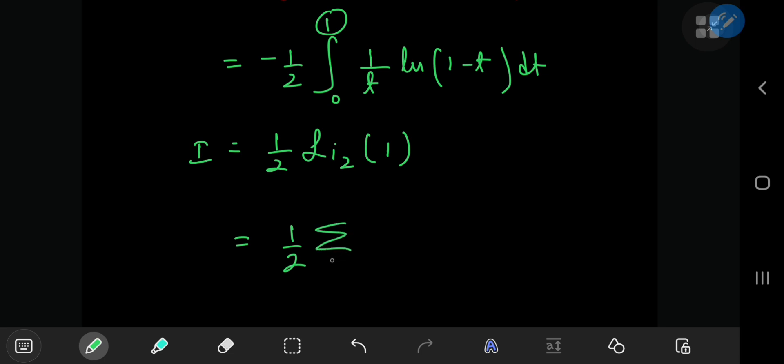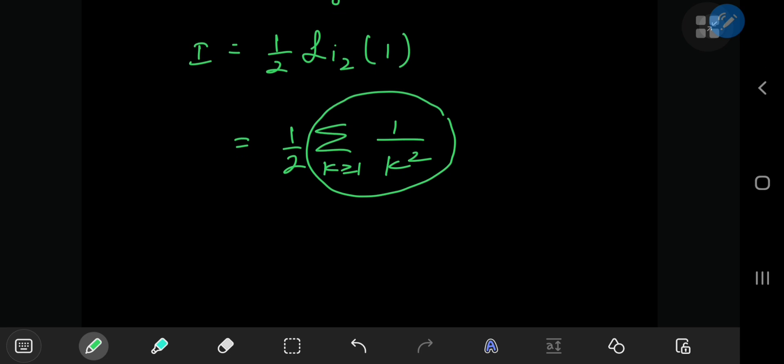And that series expansion is the sum over positive integers k of x, which in this case is 1, to the k, which we all know is 1, divided by k squared. And this is something that has been following me around lately. It's the Riemann zeta function